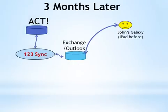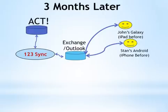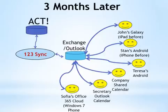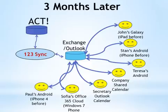Three months later, the world's changed. John used to have an iPad, now he has a Galaxy, and the Galaxy is syncing with Exchange. The Android is now syncing with Exchange instead of having the iPhone, or another Android has been changed, while the company is still the same. Sophia has decided to go with a 365 Cloud, where she can access her data just through the web browser, and she has a Windows 7 phone. Paul has an Android — he had an iPhone 4 before. So although the world is changing and these phones and accessibility components are changing, your synchronization solution is constant.